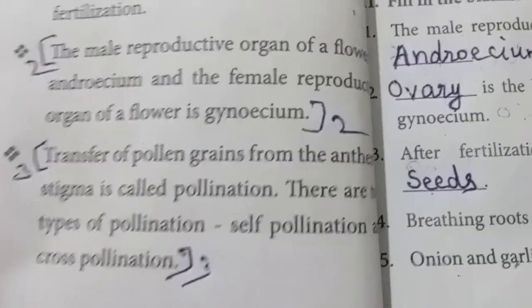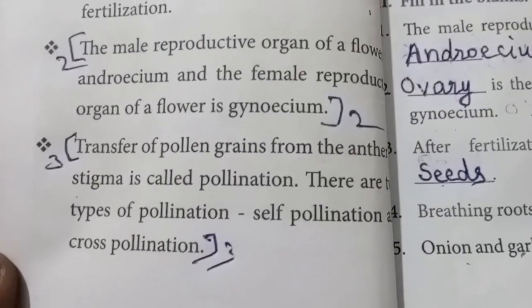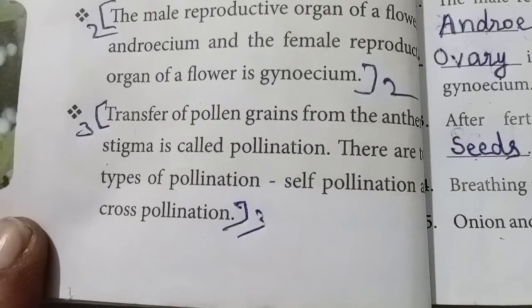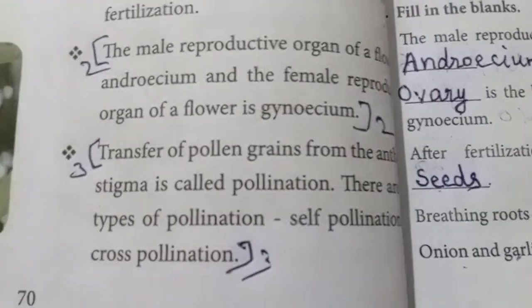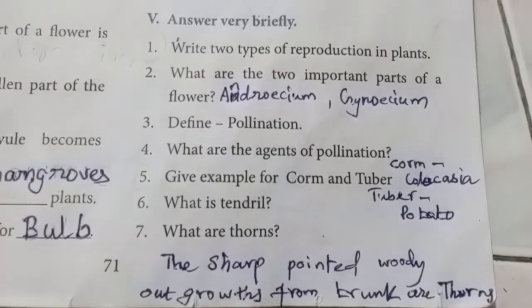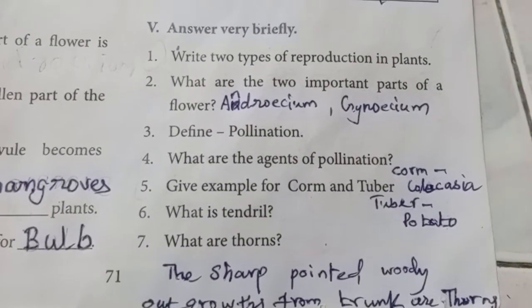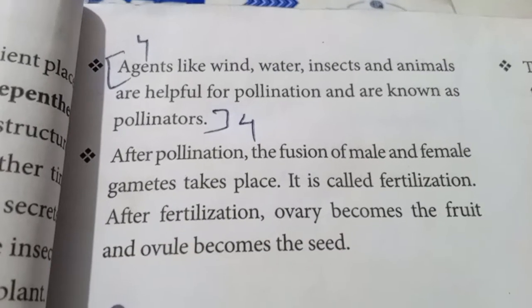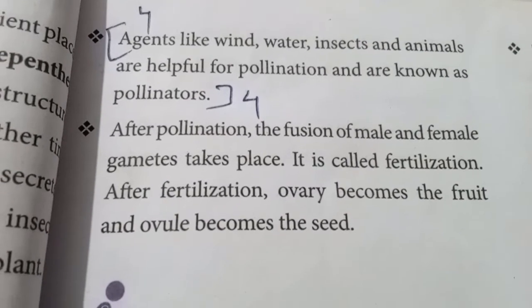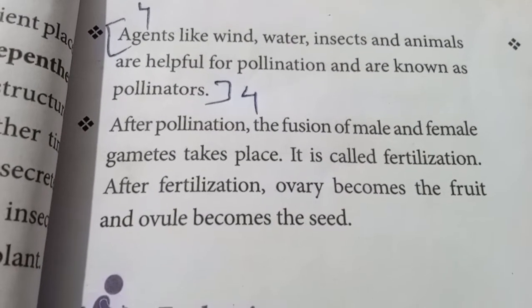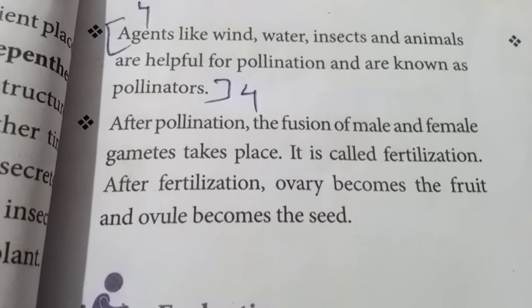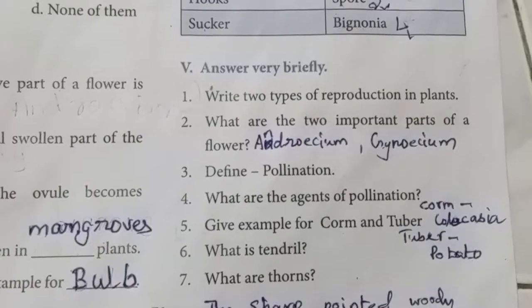Define pollination: Transfer of pollen grains from the anthers to the stigma is called pollination. There are two types of pollination: self-pollination and cross-pollination. What are the agents of pollination? Agents like wind, water, insects, and animals are helpful for pollination and are known as pollinators.